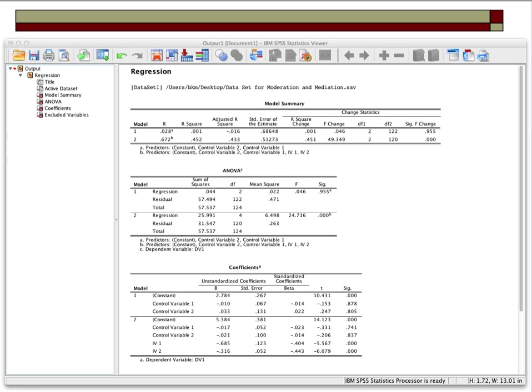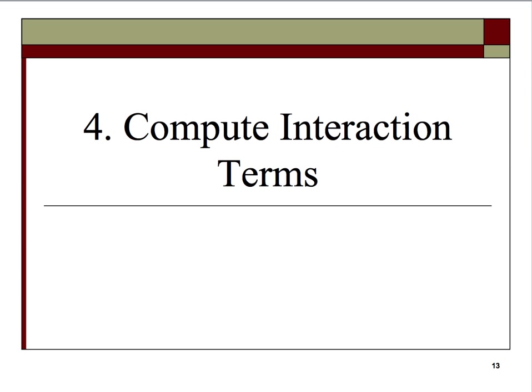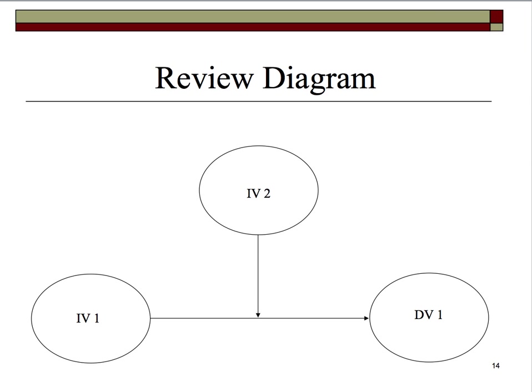What we need to do now is actually compute some interaction terms. Now that we've mastered hierarchical regression and understand we'll use it in moderation tests, let's take another quick peek at that diagram. We're saying here that IV2 affects the relationship between IV1 and DV1. Since IV1 and IV2 will be multiplied by each other to create a new artificial interaction term, the product of IV1 times IV2 is the same as IV2 times IV1.